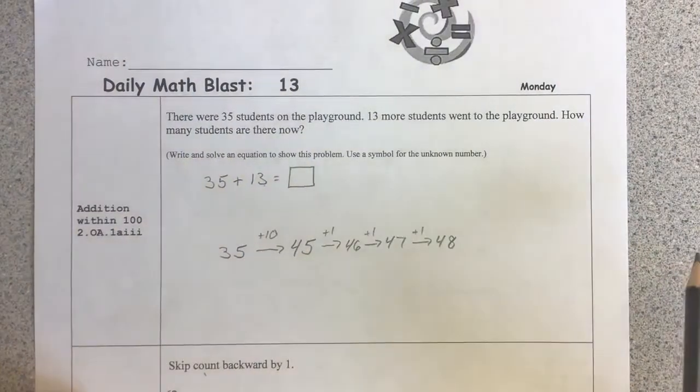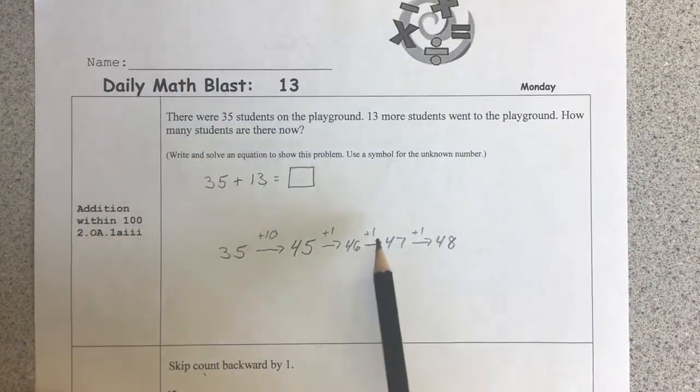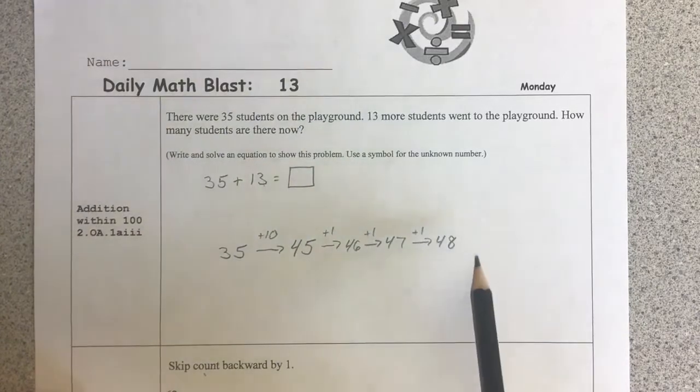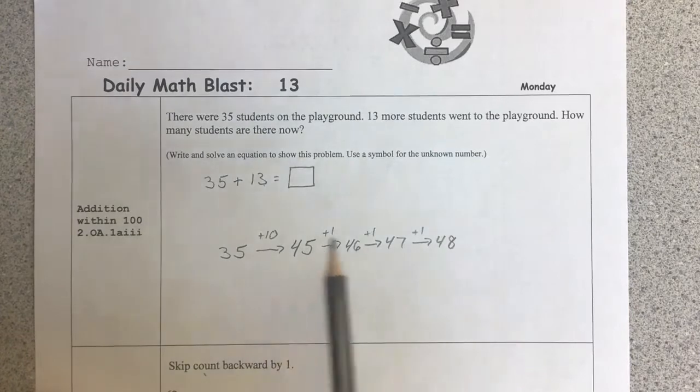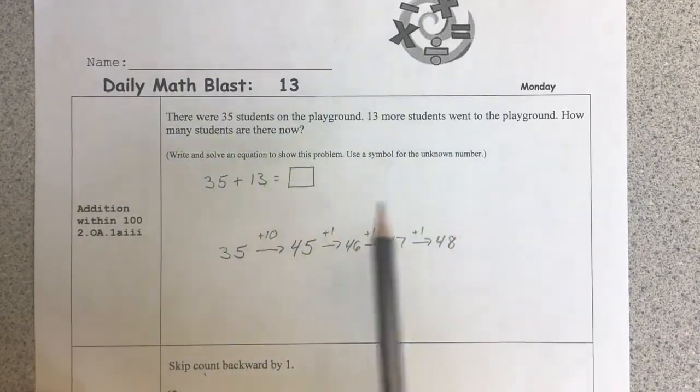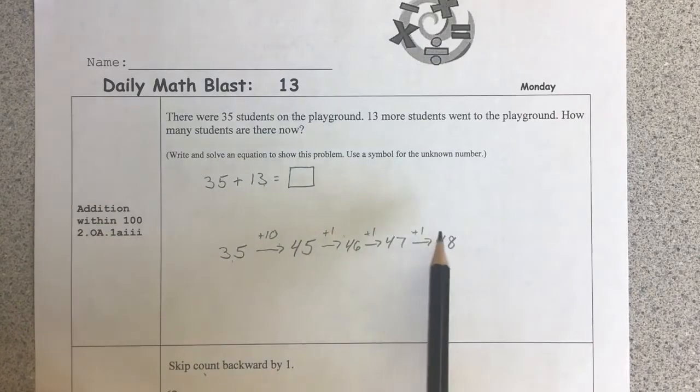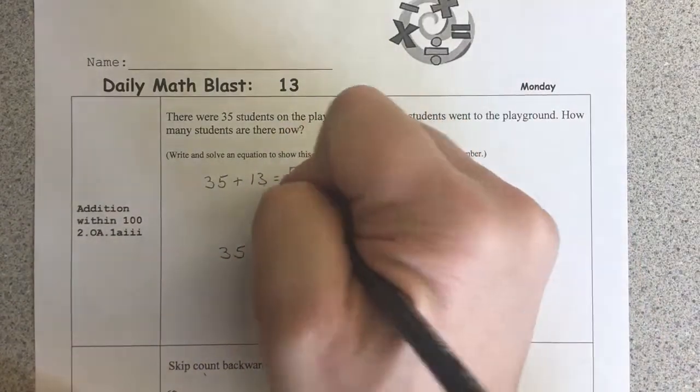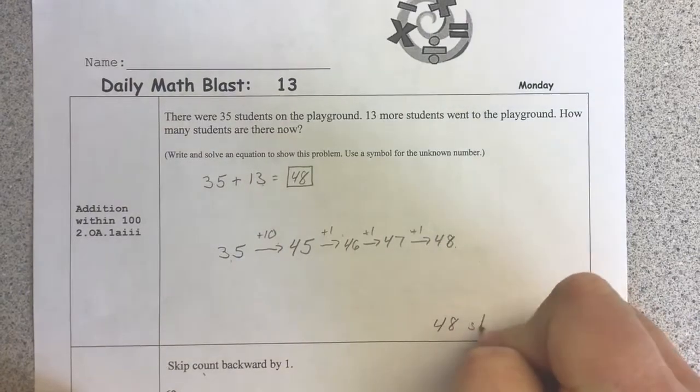Now remember, your arrows may look different than mine. I could have drawn an arrow of 10 and then drawn one arrow of plus 3 to make that jump all in one. It's not important what your arrows are as long as they're quick, easy, and the total value of those arrows add up to the 13. So 35 plus 13 is 48. 48 students.